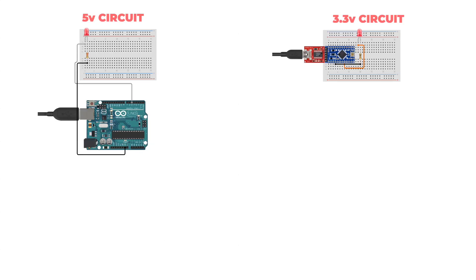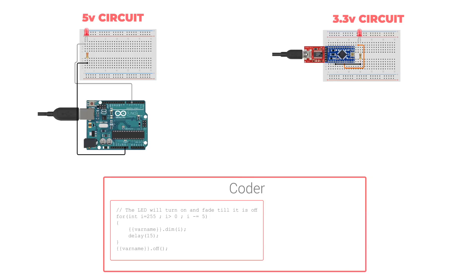Each circuit can also contain a coder. Coders contain the code snippet and code libraries for the circuit. Different circuits can use the same coder or a different one.